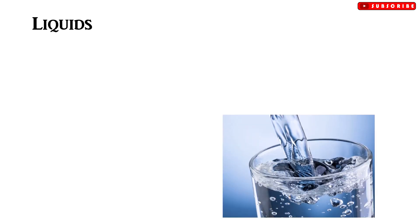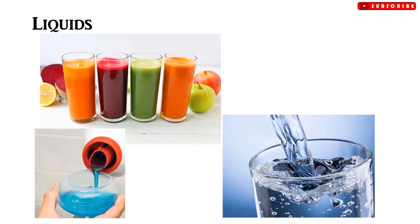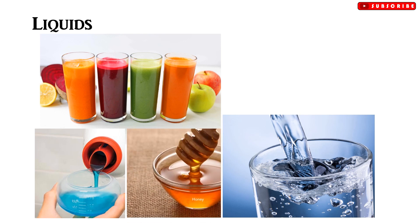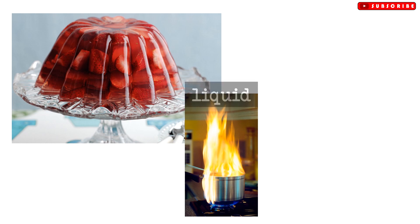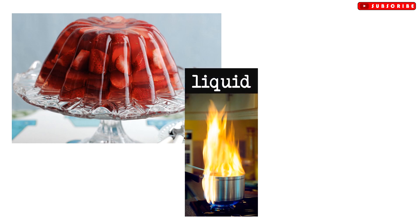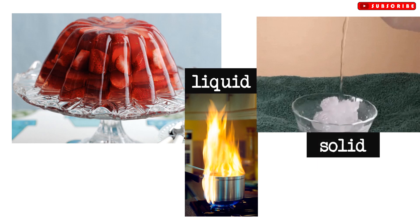Liquids have no fixed shape. They have fixed volumes. Liquids can flow easily. They are used when we need to use something that flows or something that can fill a mold. When jowli is heated, it becomes liquid and takes up the shape of its mold. Once it is cooled, it becomes solid and maintains the shape of its mold.